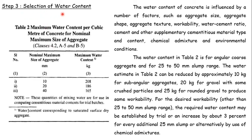Step 3 is selection of water content. The water content of concrete is influenced by a number of factors such as aggregate size, aggregate shape, texture, workability, water-cement ratio, cement and other supplementary cementitious materials type and content, chemical admixture and environmental conditions. Water content depends on all the factors of other materials. The water content in Table 2 of IS 10262-2009 is for angular coarse aggregate and for a 25 to 50 mm slump range.